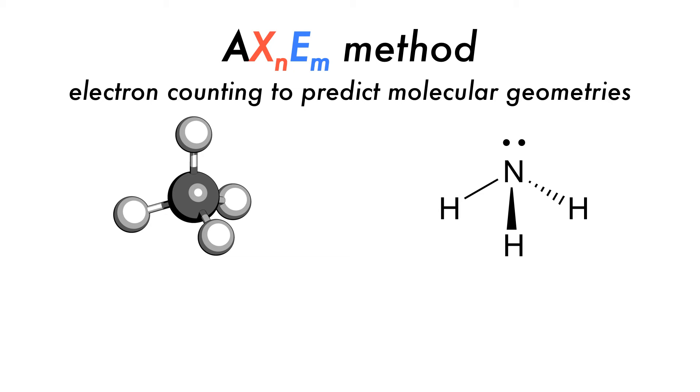A is the central atom, X is any ligand, an atom bonded to A, and E represents any lone pairs. If we sum X and E, we obtain the steric number for the molecule.